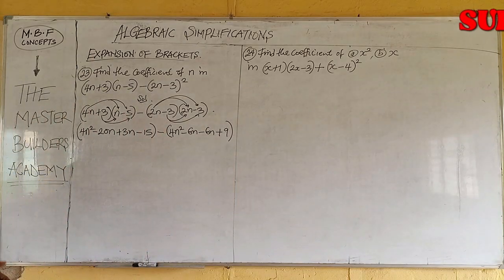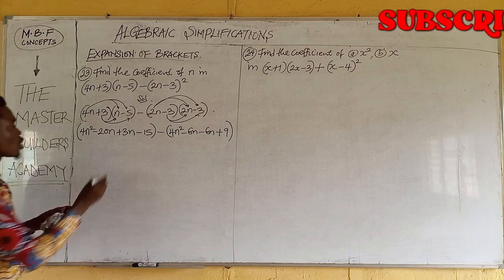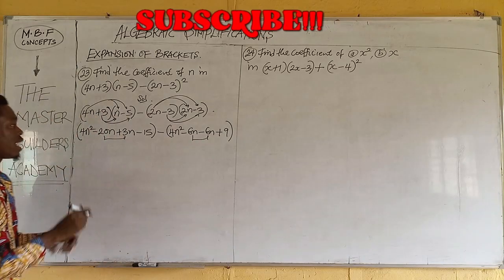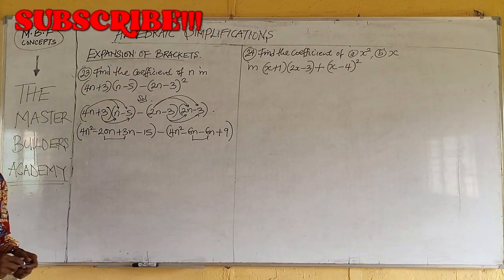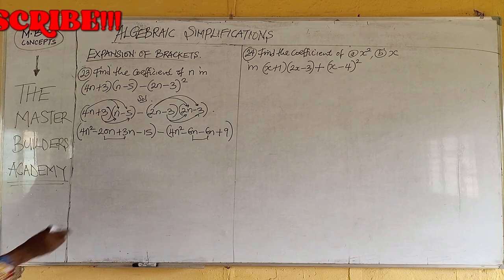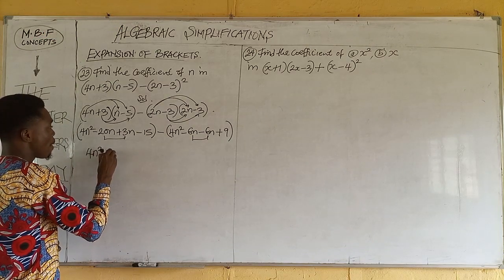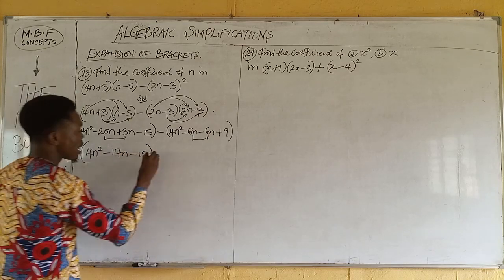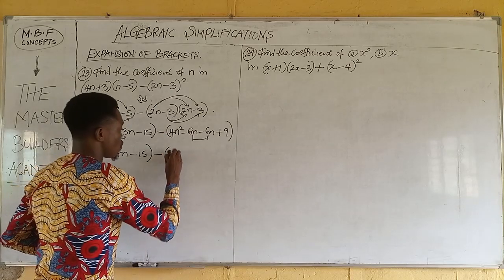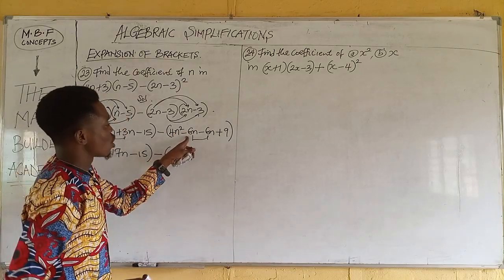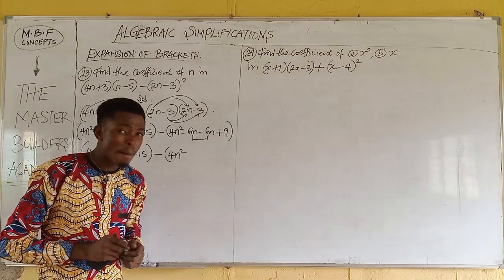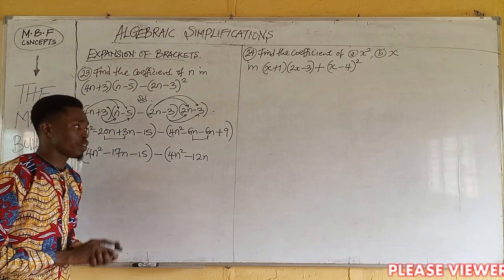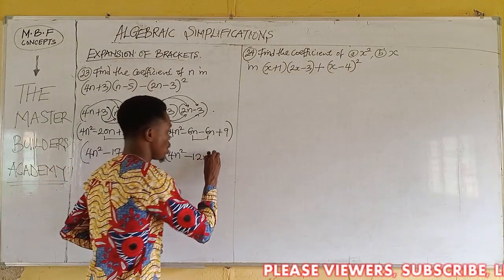Minus times minus is plus. The two middle terms in the first expansion: minus 20n plus 3n gives us minus 17n. So the first expansion gives us 4n squared minus 17n minus 15. Then, with the minus sign and open bracket for the second expansion: minus 6n minus 6n gives us minus 12n. So inside the bracket we have 4n squared minus 12n plus 9.